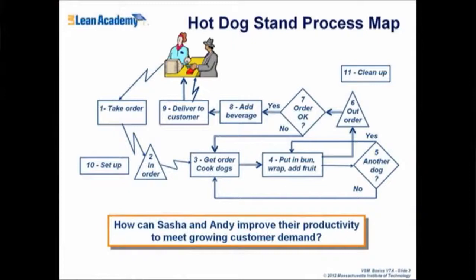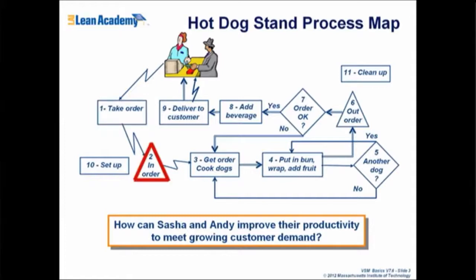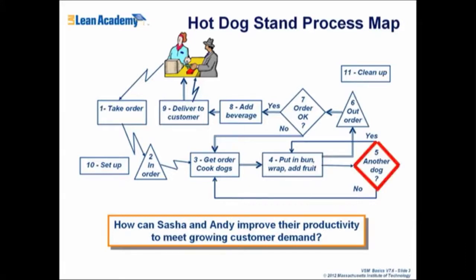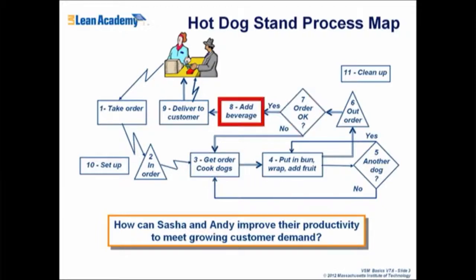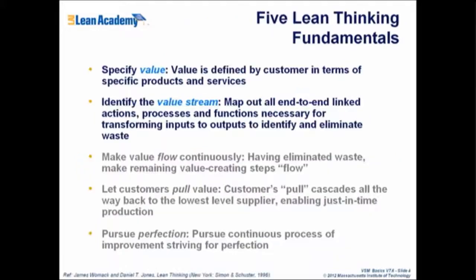Back to the hot dog stand. It starts with taking the order, placing it in the in-tray, getting the order, cooking the dogs, putting them in the bun, and wrapping them. Then it's a question of whether they need another hot dog or not. If they don't, they go to order out. If they do, you go back. Check if the order is OK, add the beverage, deliver it to the customer, and the customer leaves with their hot dogs.